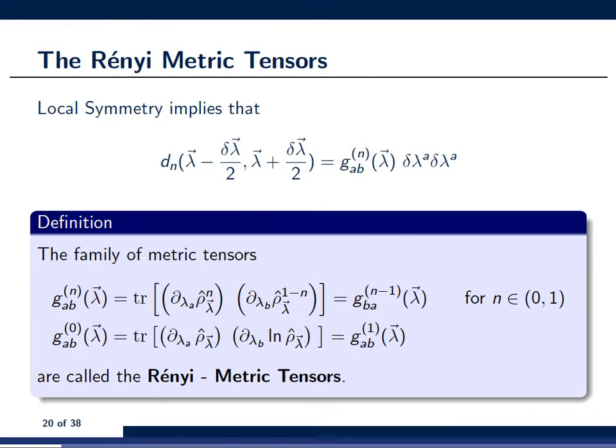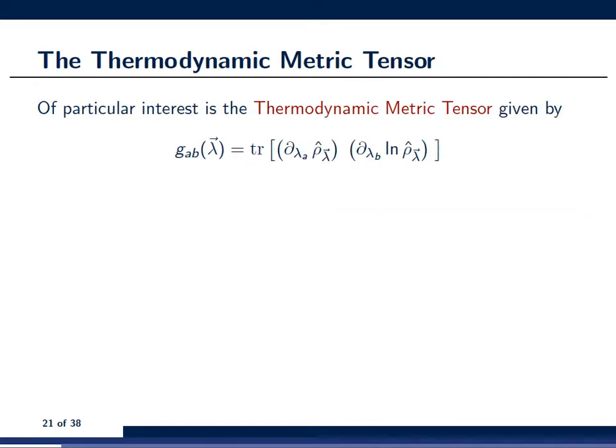And the metric tensors that they generate are what we call the Renyi metric tensors. And there's a special metric tensor which is the case for n equals to 0, the analytic extension, so to say, which you see at the very bottom of this slide that is of particular interest to us. And this metric tensor we call the thermodynamic metric tensor. And I've written it here again. And I would like to explain to you now why this metric tensor is so special and maybe so important.